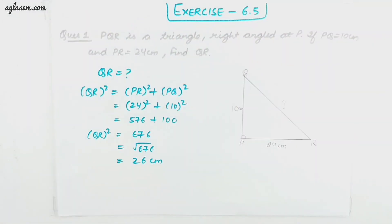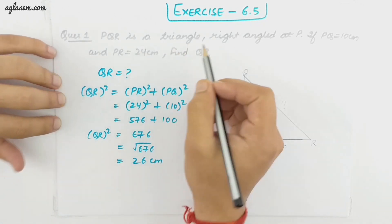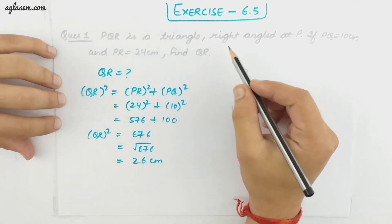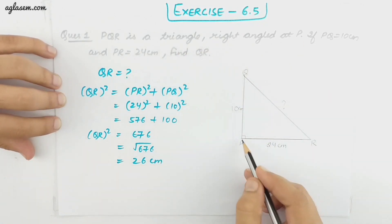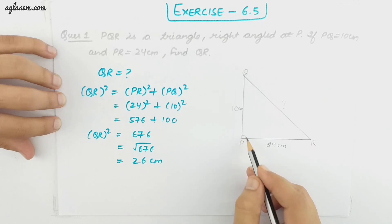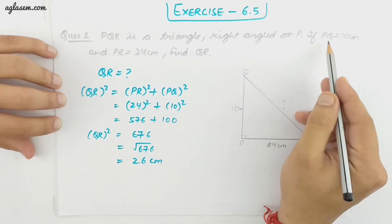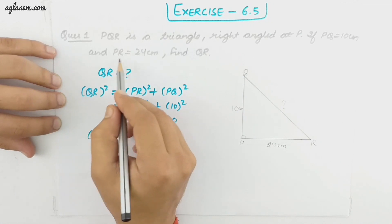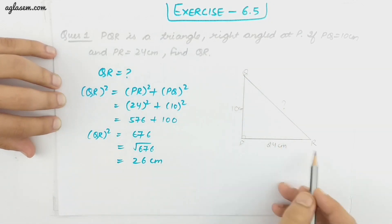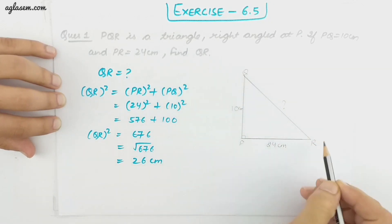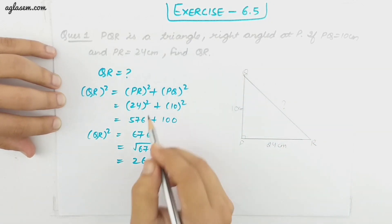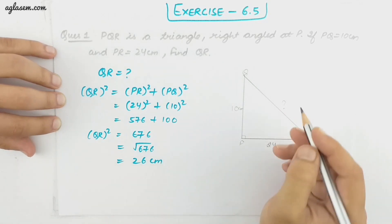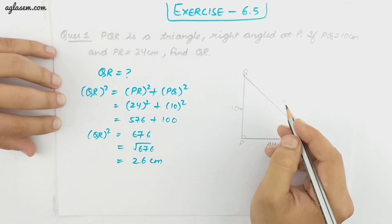Let's start with exercise 6.5. The first question is: PQR is a triangle right-angled at P. PQ is 10 centimeter and PR is 24 centimeter. Find QR. In this question we are going to use the Pythagoras property.